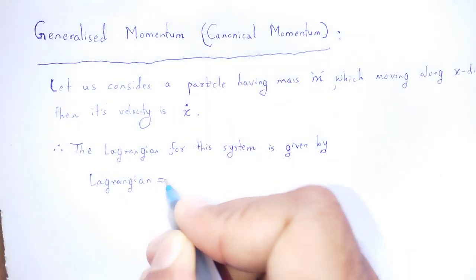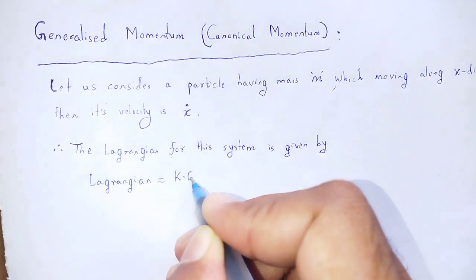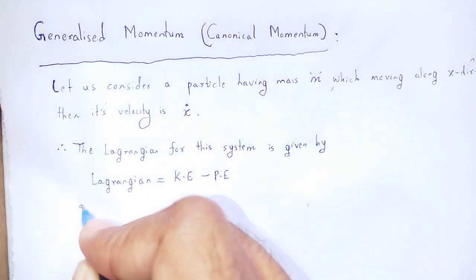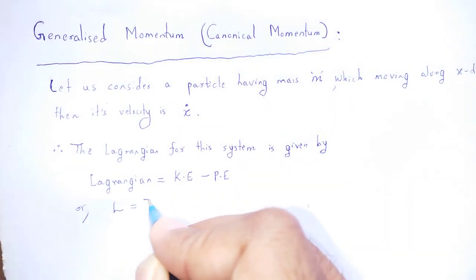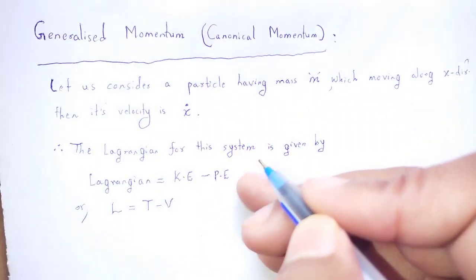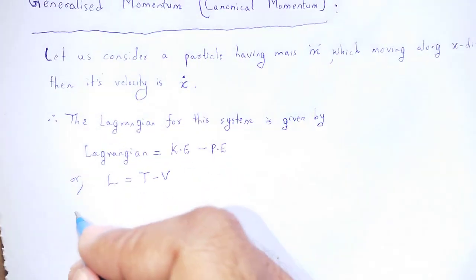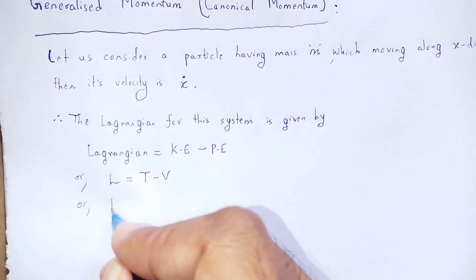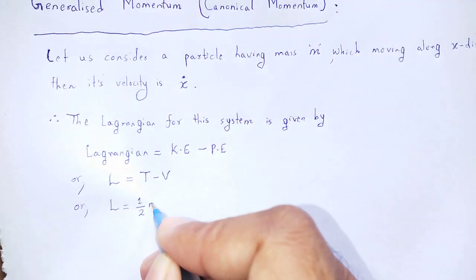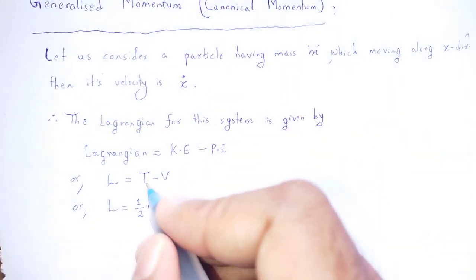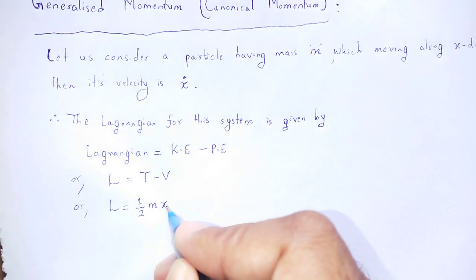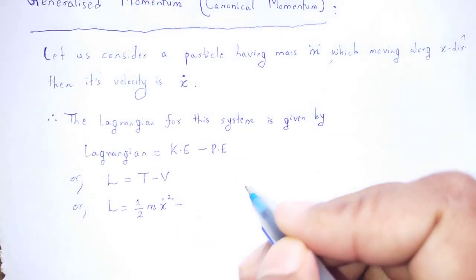The Lagrangian is equal to kinetic energy minus potential energy: L = T − V. For this system, the kinetic energy is one-half m times x-dot squared, and the potential energy is a function of position x, so V = V(x).